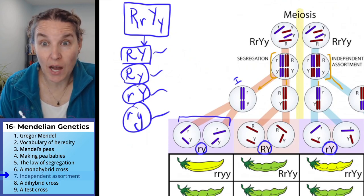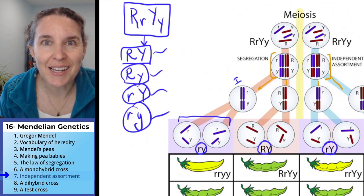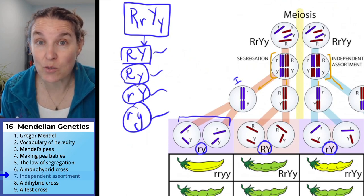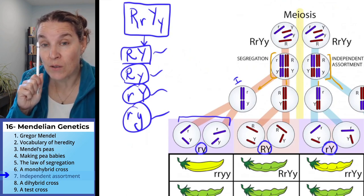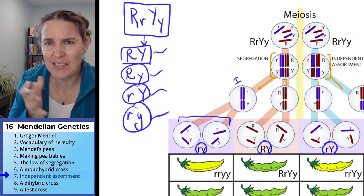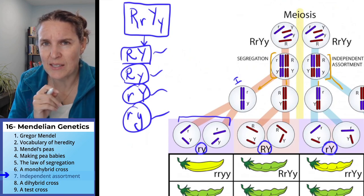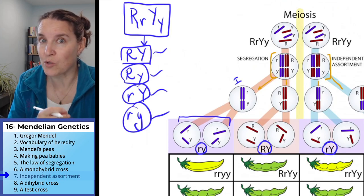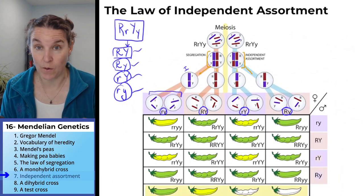Do you agree that we got those because we went through meiosis? And do you agree that we got those because of independent assortment? That's the piece that Mendel was like — I think they can line up and separate independently of each other when we're dealing with two traits. Indeed.